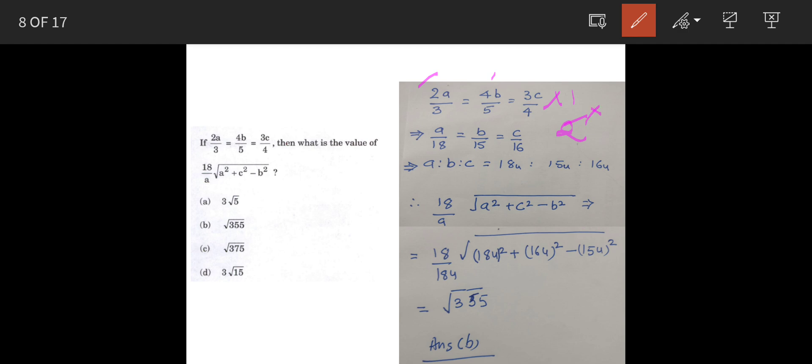So, again multiply it by 1 by 2. And then we will have 3 here. So, then again multiply it by 1 by 3. So, when we do this, you will get the equation in the form of a upon 18 is equal to b upon 15 is equal to c upon 16.